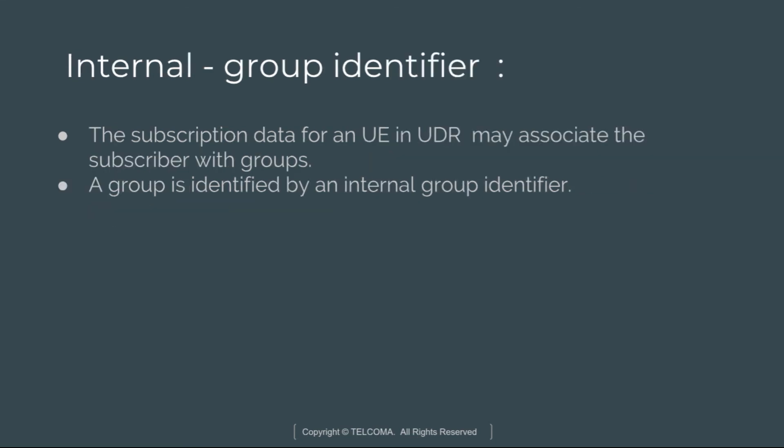The Internal Group Identifier is used to associate subscribers with groups. The subscription data for the UE in the UDR may associate the subscriber with groups, and a group is identified by an internal group identifier. A UE can belong to a limited number of groups, and support of groups is defined in non-roaming cases as well. The internal group identifiers corresponding to a UE are provided by the UDM to the SMF as part of session management subscription data.